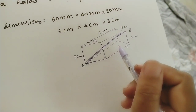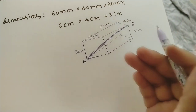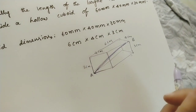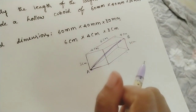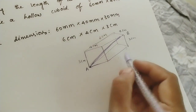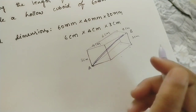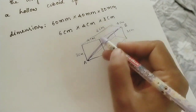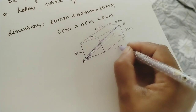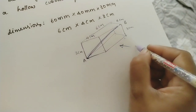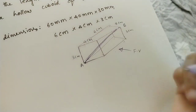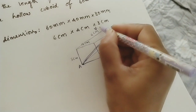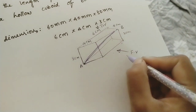Now in the projections of lines, projections means front view of that line and top view of the line. Here instead of a line we are taking the rod inside the cuboid, so we need to do the front view and top view. Front view and top view are called projections. We look from the direction where the largest dimension is — since 6 cm is the largest, that side gives us the front view. Top view (T.V.) and front view (F.V.) are the abbreviations used.